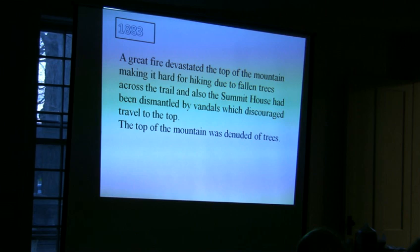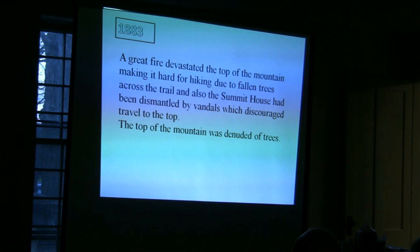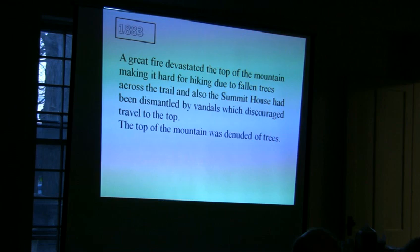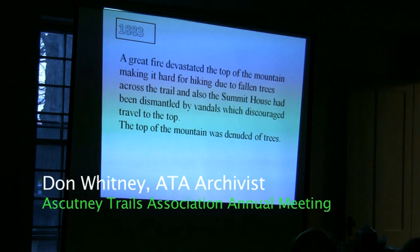In 1883, they had a big fire on top of the mountain, and they say it burned most of the summer. It made it difficult to use the trail because of all the dead or fallen trees. Sometime in that period the Summit House was pushed over and destroyed by vandals. I suspect that after the fire the roof was pretty much burned down, which made it easier for anybody to go up and push the walls in.